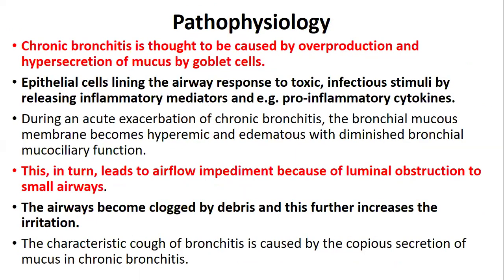Chronic bronchitis is thought to be caused by overproduction and hypersecretion of mucus by the goblet cells. Once there is irritation, the normal response of secretory cells is to increase secretion. Due to injury or irritation in the respiratory system, the goblet cells respond by overproducing mucus, which now leads to the abnormality that is the hallmark of chronic bronchitis. Epithelial cells lining the airways respond to toxic or infectious stimuli by releasing inflammatory mediators and pro-inflammatory cytokines, which in turn leads to airflow impediment due to luminal obstruction.